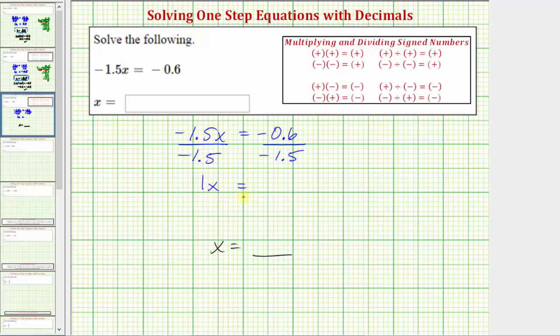Now looking at the right side, we need to find this quotient, but notice how we have a negative divided by a negative, which is a positive. Let's write this fraction as positive 0.6 over positive 1.5.